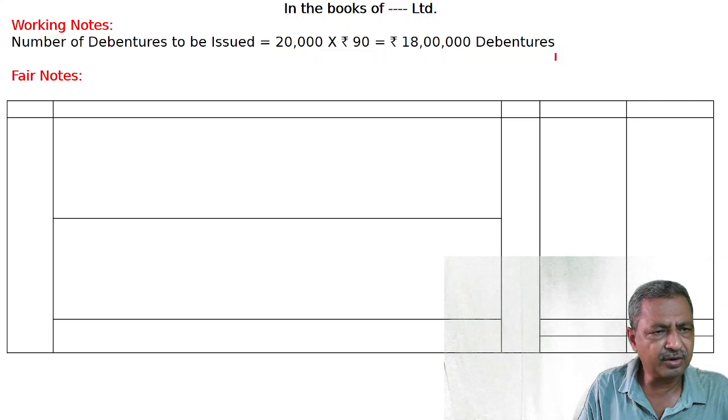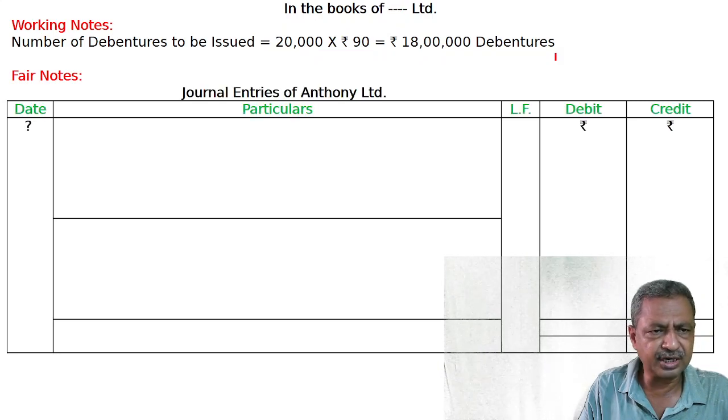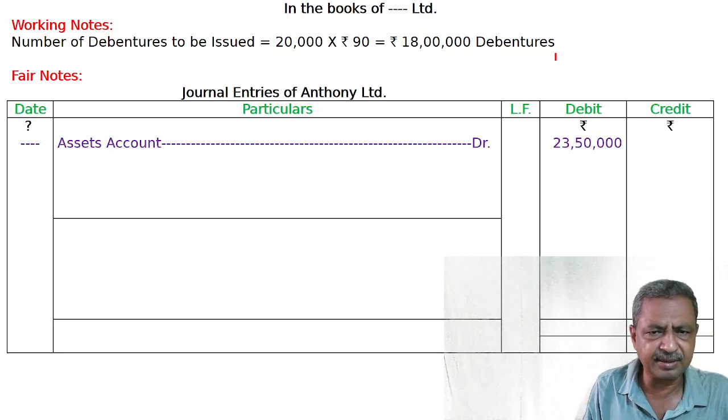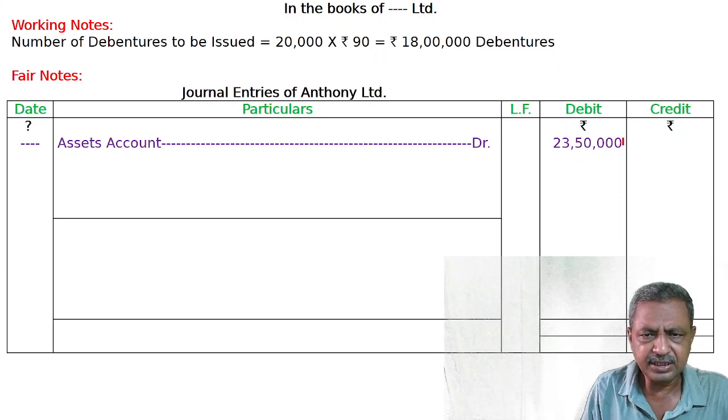For the journal entry, assets account is debited with 23,50,000.